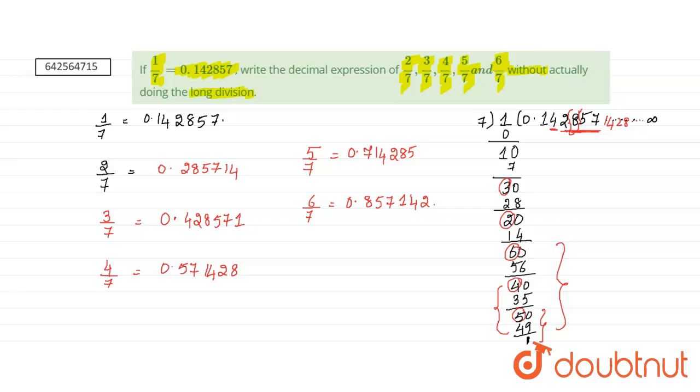So, we have all our answers. 1 by 7, this is 2 by 7, 3 by 7, 4 by 7, this is 5 by 7, 6 by 7.